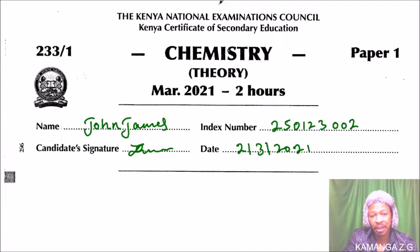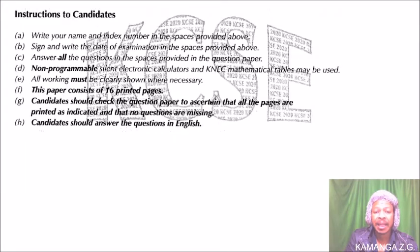From there we have the instructions, which are very important to read. The instructions say to write your name and index number in the spaces provided above—we have done that. Sign and write the date of examination in the space provided. Answer all the questions in the spaces provided in the question paper. That is very important—you don't write your work on other extra papers which you will not hand over with the paper.